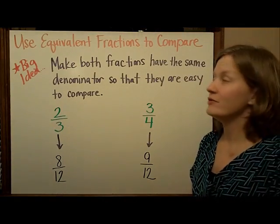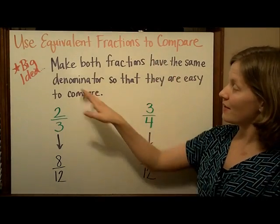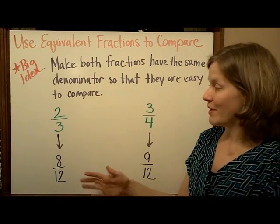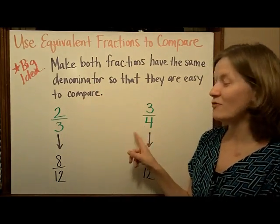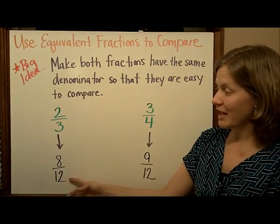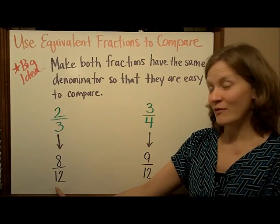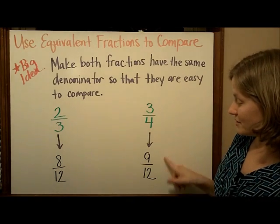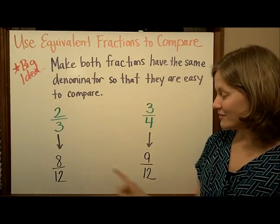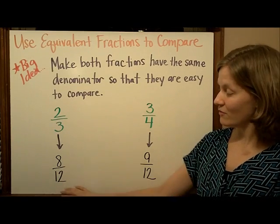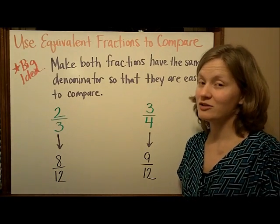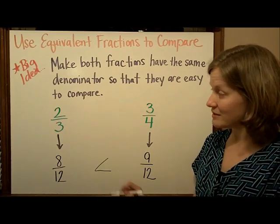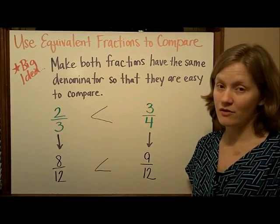We can use equivalent fractions to compare fractions. The big idea is that we will make both fractions have the same denominator so that they are easy to compare. I have the fractions two-thirds and three-fourths, which are pretty close. If I find equivalent fractions that both have the same denominator — two-thirds is equal to eight-twelfths, and three-fourths is equal to nine-twelfths — now they have the same denominator. When the denominators are the same, the bigger fraction is the one with the greater numerator. So eight-twelfths is less than nine-twelfths, which means two-thirds is less than three-fourths.